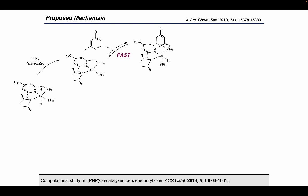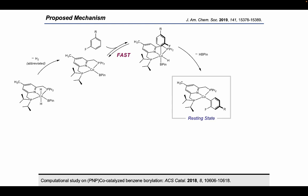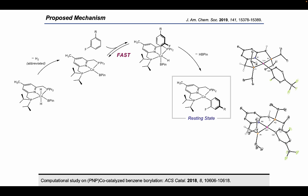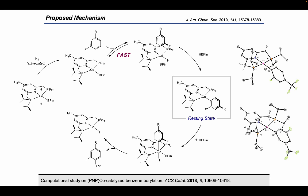Instead, HBPin is reductively eliminated to afford a cobalt-1 aryl intermediate, which is observed as the resting state when the reaction is monitored by fluorine and phosphorus NMR. It's important to note that we only observe the ortho-fluorinated isomer of this complex, and independent syntheses of both isomers allow unambiguous assignment of the ortho isomer in our in-situ studies. HBPin then undergoes oxidative addition with the cobalt-1 aryl to generate a cobalt-3 intermediate with mutually cis aryl and boryl ligands, which can then reductively eliminate the aryl boronate product. One question we haven't addressed yet is why this reversible C-H oxidative addition results in ortho-defluorine selectivity.